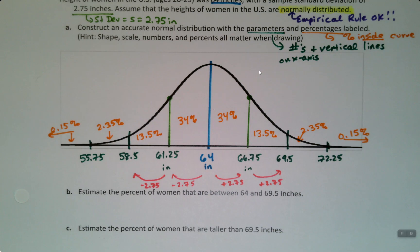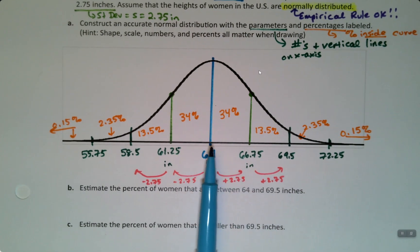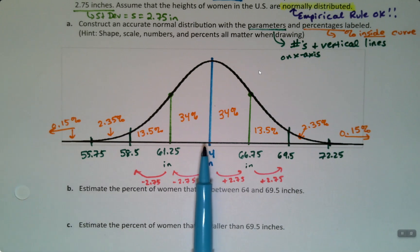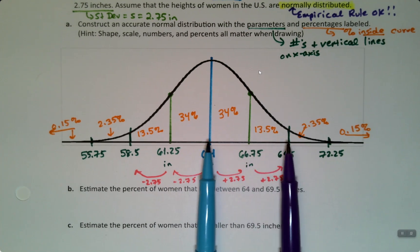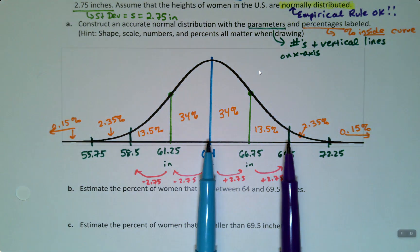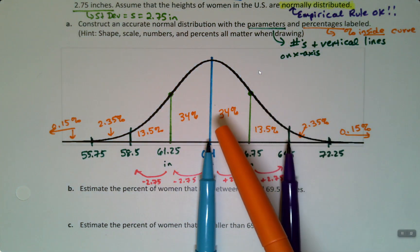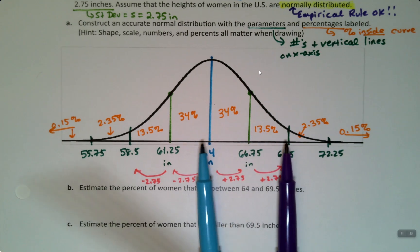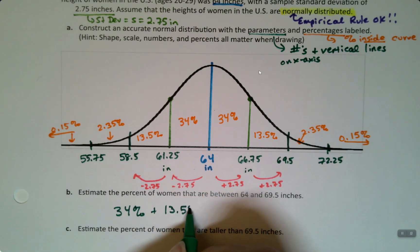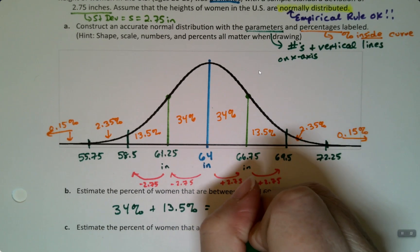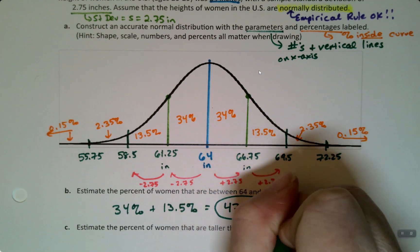Then, once you have this all filled out and beautiful, the questions themselves are not actually that hard. So the first one says, estimate the percentage of women that are between 64 and 69.5 inches tall. So 64 inches is right here, 69.5 inches is over here. So the percentage of women that fall between that would be those two percentages added up. So you add those two percentages, 34% plus 13.5%. So 34% plus 13.5% makes 47.5%. Done. It's those two sections.